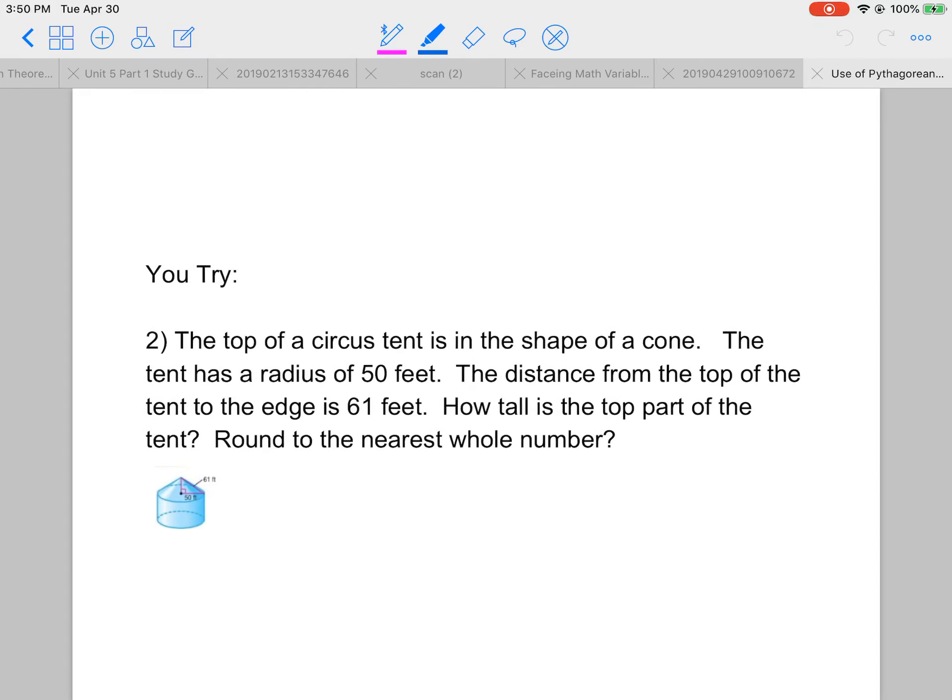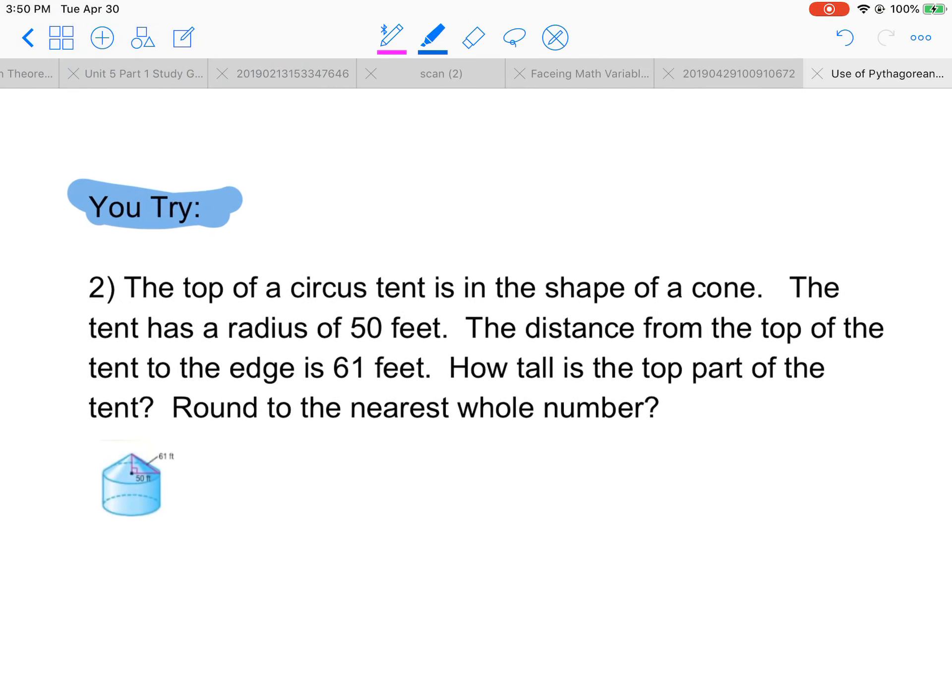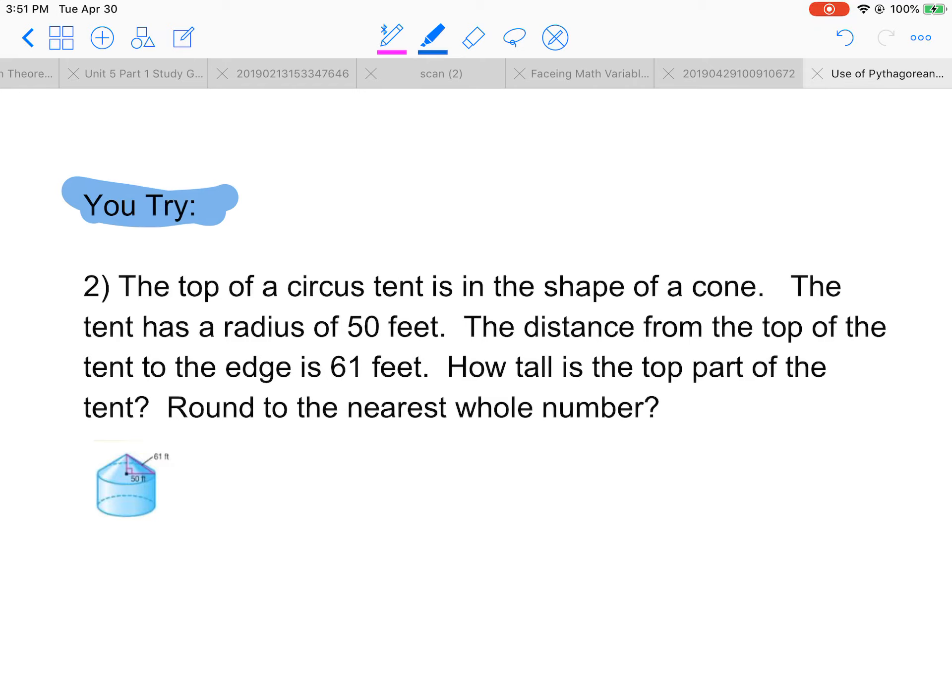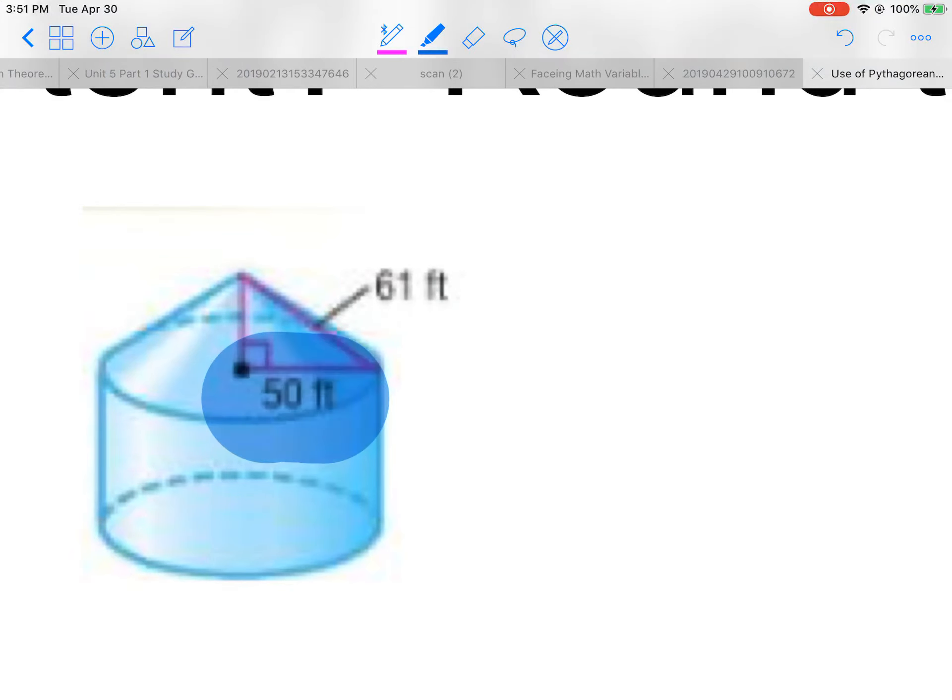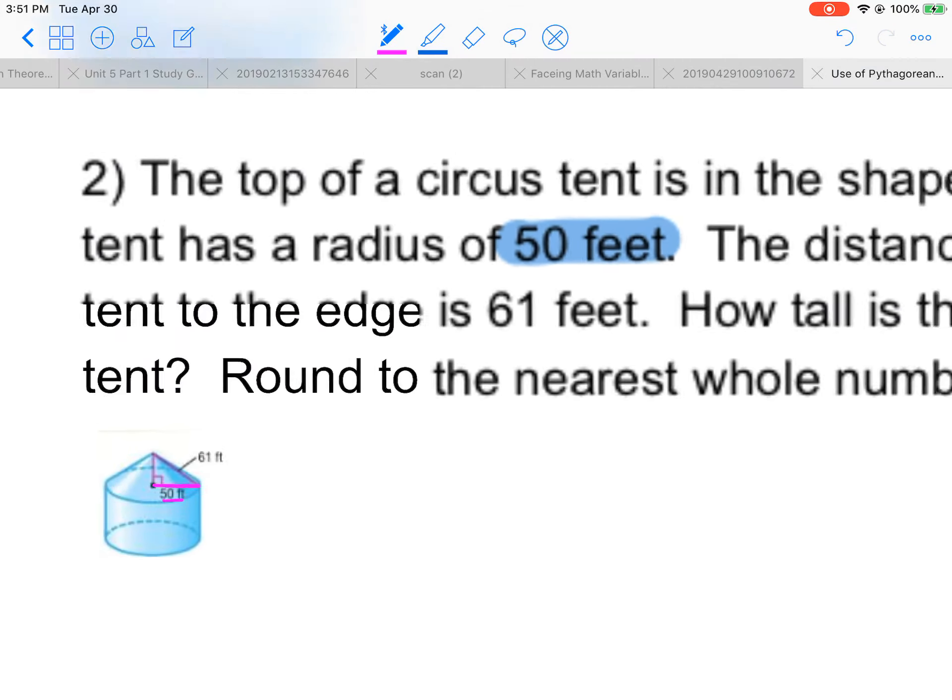Let's go ahead and go to the next page. And this is a you-try. Let's see if I can do this without giving you half the answer. I'll read it for you. The top of a circus tent is in the shape of a cone. The tent has a radius of 50 feet. You can see that right here. That's the radius of the cone, but also the base of this little triangle.